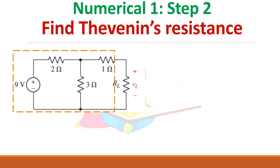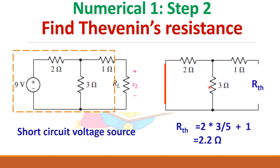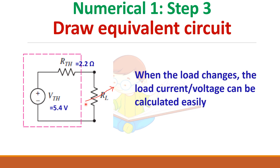Now let us find the Thevenin resistance. To find the resistance, remove the sources — short circuit the voltage source — and find the resistance across this terminal. You should start reducing the network from the opposite side. 2 ohms and 3 ohms are in parallel: 2 into 3 divided by 2 plus 3, plus 1 ohm. So Rth equals 1.2 plus 1 equals 2.2 ohms. We have drawn the equivalent circuit with voltage source in series with the Thevenin resistance. As the load changes, only this resistance value will change, which we can easily calculate.